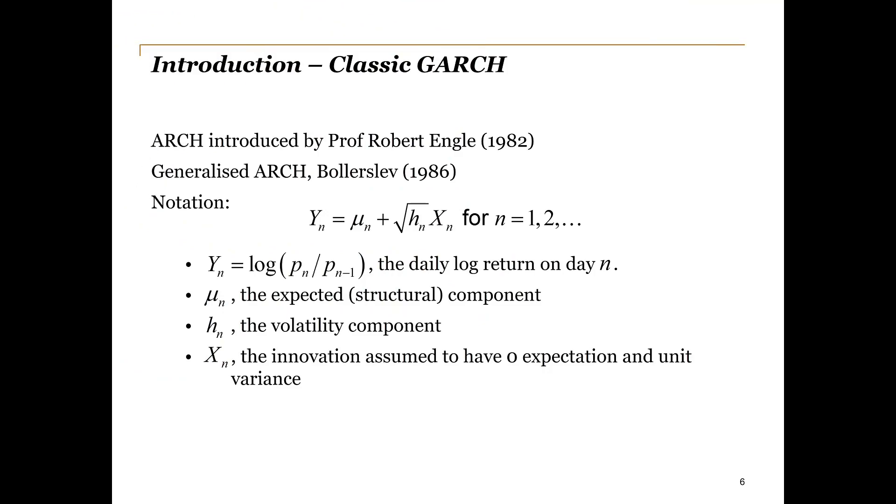We will now consider ARCH models and their descendants for modeling these asset price returns, and work our way towards such distributions. Serious study into the issue of modeling financial volatility got underway when Professor Robert Engel introduced the autoregressive conditional heteroscedasticity model in 1982. This seminal paper triggered one of the most active and fruitful areas of research in econometrics over the past four decades.